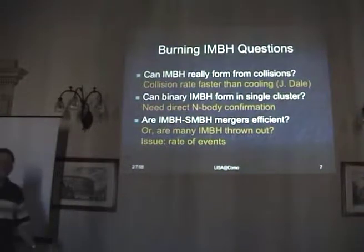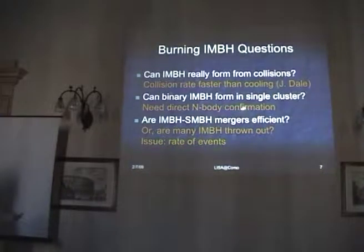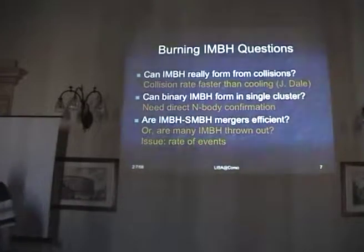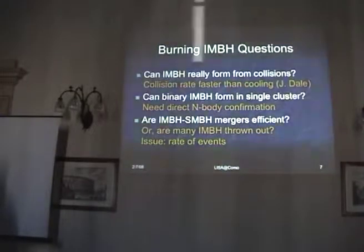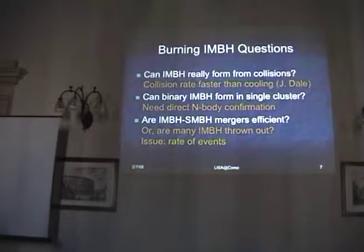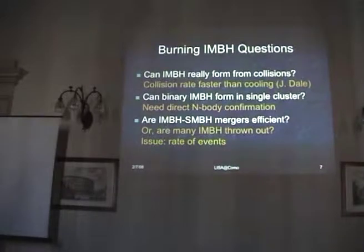Can a binary IMBH form in a single cluster? I showed you results from Monte Carlo simulations. Direct N-body simulations are the closest you can get to absolute reality of dynamics, and it would be nice to have direct N-body confirmation of this. As for the IMBH-to-supermassive black hole group, there's a significant issue of efficiency. We've heard a lot about the last parsec problem for two supermassive black holes. If you have something similar for IMBH-SMBH pairs — where the IMBH can go in just so far and then stalls — the next IMBH in can interact in such a way that you potentially throw out the first one. If ten IMBHs have to go in for one to finally merge, that's not very efficient. So this has to do with the rate of events.